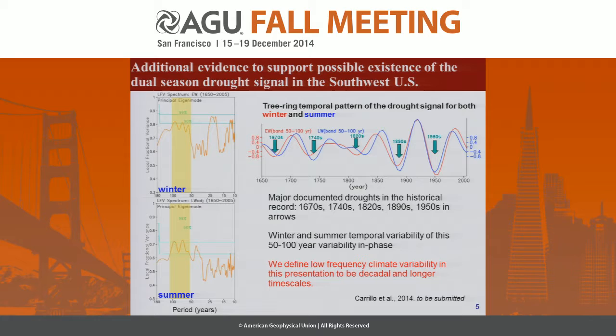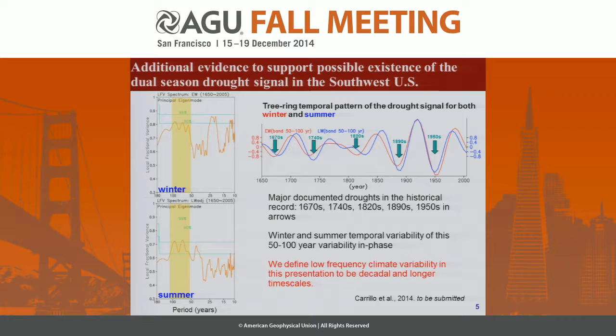Recently, Carrillo et al. provided additional evidence to support the existence of this low-frequency variability in the southwest. Using the same tree-ring chronology dataset for winter and summer, we were able to reproduce a characterization that this low-frequency variability is in the order of 60 to 100 years, as shown in the power spectrum on the left for summer and winter, and also for the time series on the right. When the major documented droughts of the four centuries are superimposed in this time series, indicated with the arrows, this low-frequency variability is the major modulation of the studied droughts. Also, as in Griffin et al., the summer and winter signals are coherently in phase.